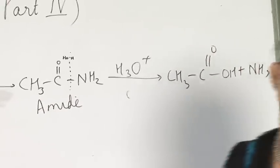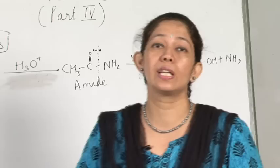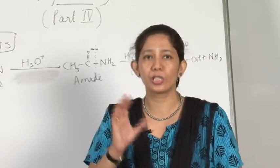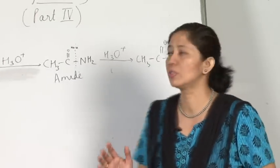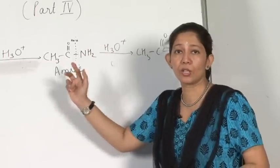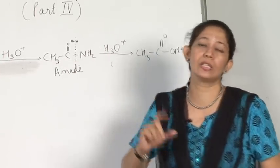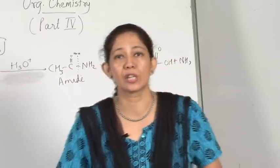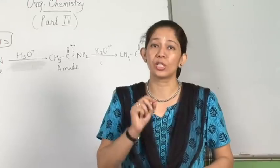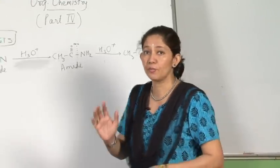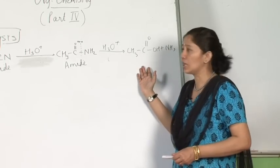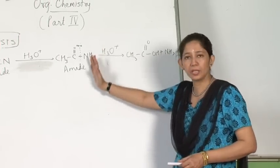You may come across questions where partial hydrolysis is specified. If it is partial hydrolysis, you are supposed to stop at the amide stage. In questions where it is specified as 'partial hydrolysis' over the arrow, do not proceed to carboxylic acid — stop at the amide.